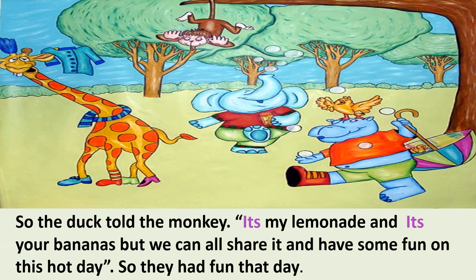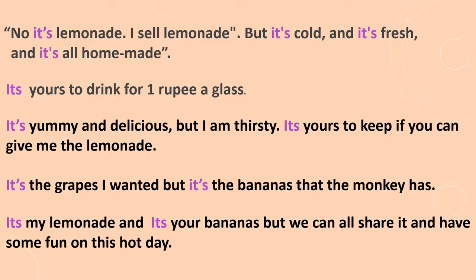Now I will go to the explanation. The shopkeeper says, 'It's lemonade.' He means to say he does not have grapes — he is selling lemonade. 'It's' is in the present tense, so the apostrophe form is used. Now the second one: 'It's yours to drink for one rupee a glass.' Here the shopkeeper wishes to say it's cheap, so it is the duck's choice — the duck will own it. So here 'its' is used without an apostrophe as a possessive pronoun.